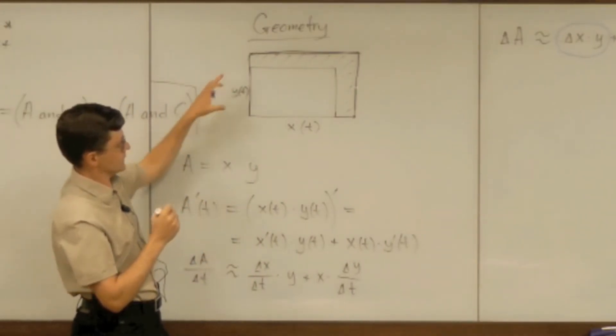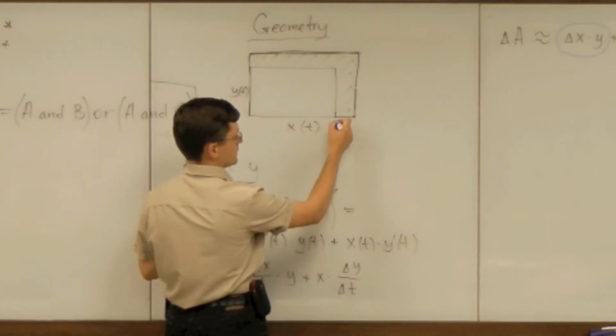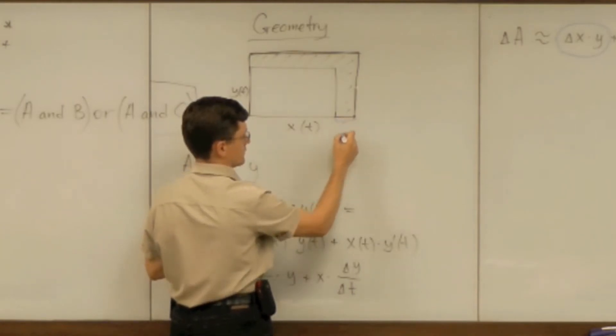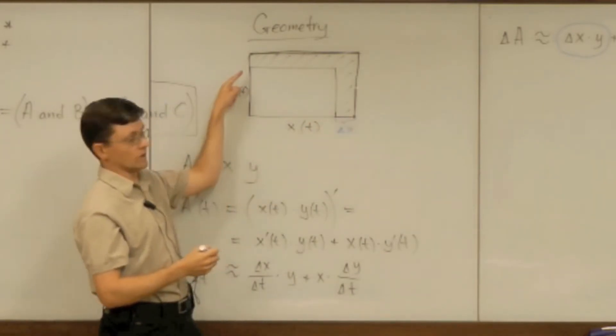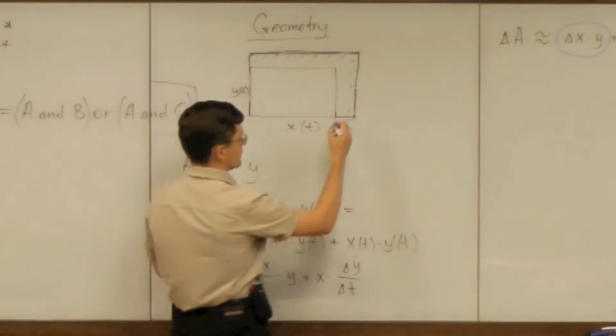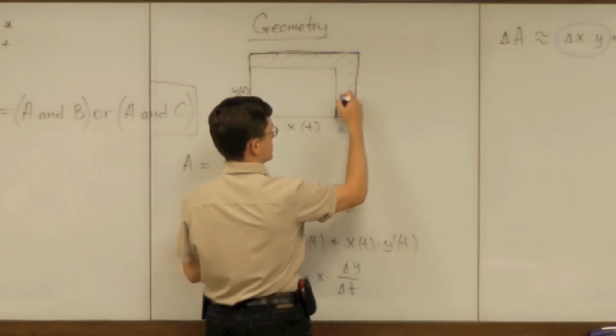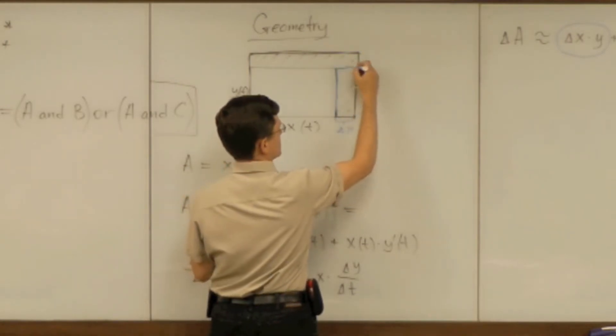If you look at where is delta x? There it's exactly there. And what if I multiply delta x by y? I get a rectangle right here.